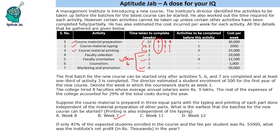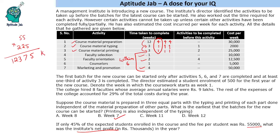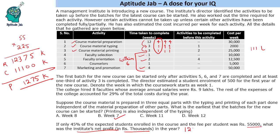If only 45% of the expected students enrolled in the course and the fee per student was 55,000, what is the institute's net profit in the year? 45% of 500 students means 225 students enrolled, and fees is 55,000. So revenue is 55,000 times 225: 55 times 5 is 275, carry 27; 110 plus 27 is 137; carry 13; 110 plus 13 is 123. So revenue is 12,375,000. The total cost was 111 lakhs, which is 11,100,000. So profit will be 1,275,000.